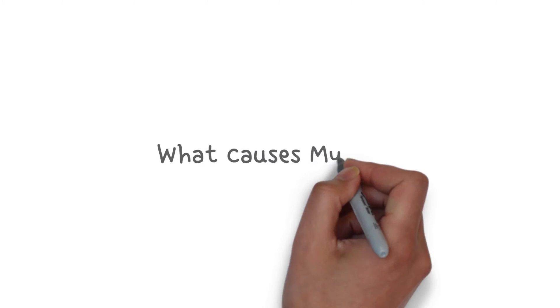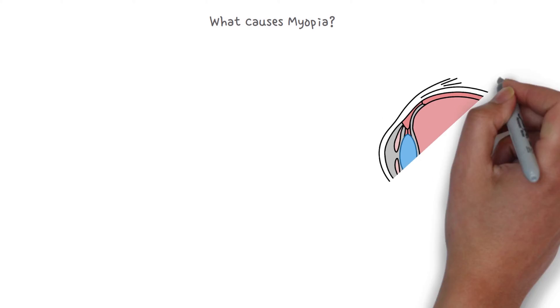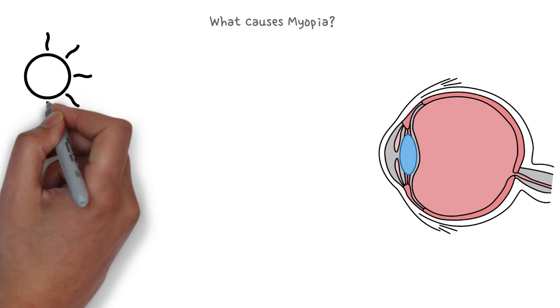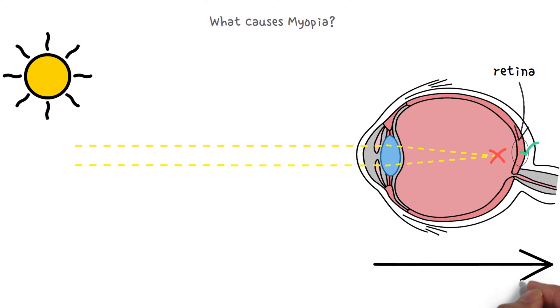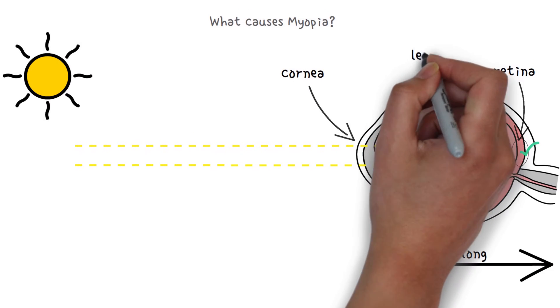What causes myopia? This is our eye, and this is a ray of light. In myopia, the rays of light entering the eye are brought to a focus in front of the retina rather than directly on its surface. This usually results from the eyeball being too long, but can occur from an overly curved cornea or a lens with increased optical power.